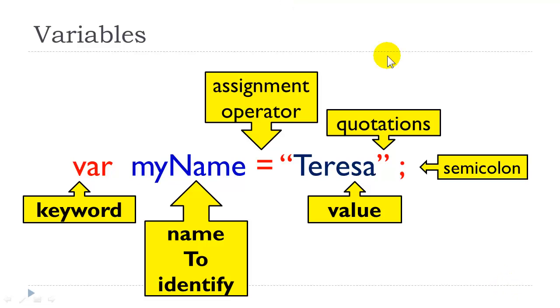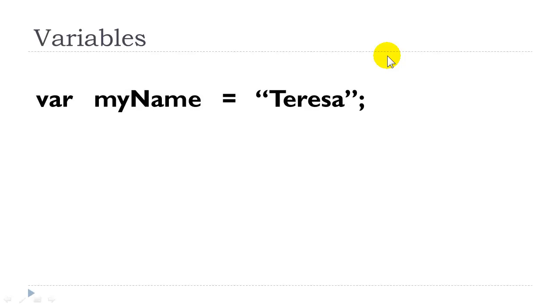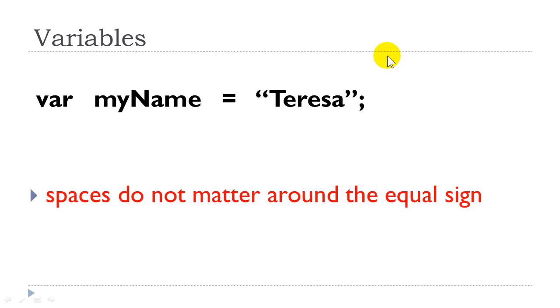When you create a variable, you are assigning the value from the right to the left. Spaces do not matter around the equal sign, and you can have many spaces between the keyword var and the name of the variable also.